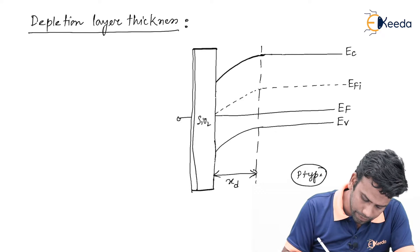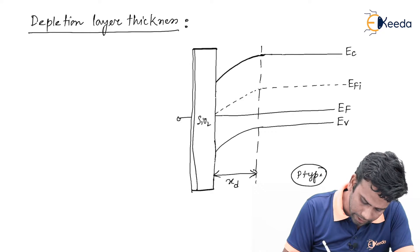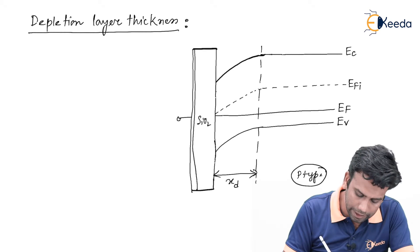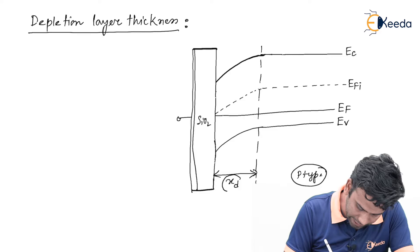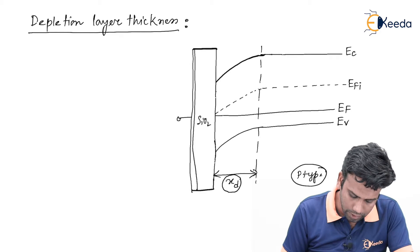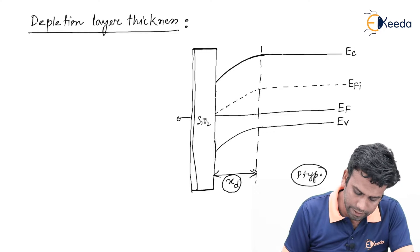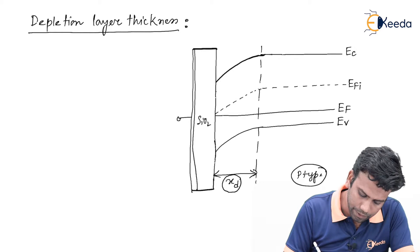According to the diagram we can see that the depletion layer Xd has been created due to the depleted carriers and it is a P type.